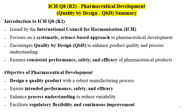The objective of product development is to design a quality product that is manufactured with a robust manufacturing process, ensuring intended performance, safety, and efficacy. Pharmaceutical development enhances process understanding so that the process is robust and reduces variability. The objective is also to facilitate regulatory flexibility and continuous improvement — formulating a product with robust composition and manufacturing process. In total, this guideline provides understanding for the lifecycle of the pharmaceutical product.